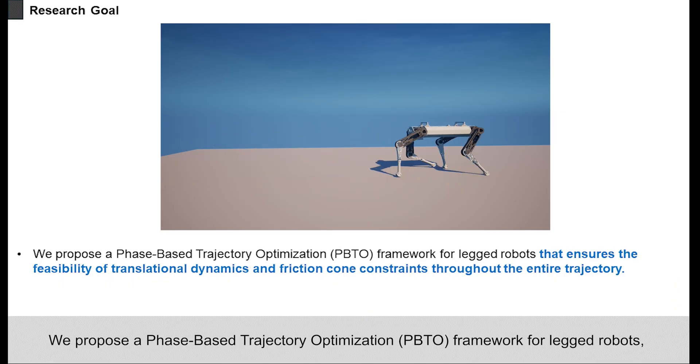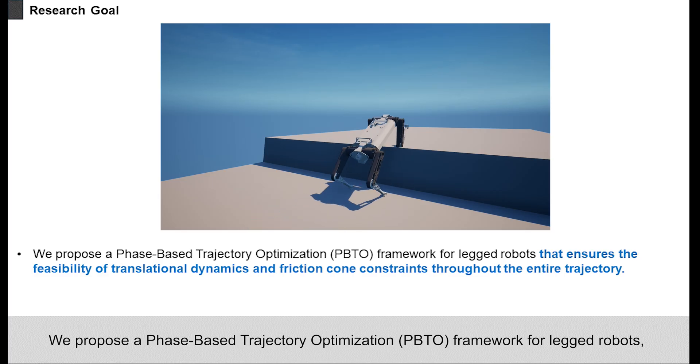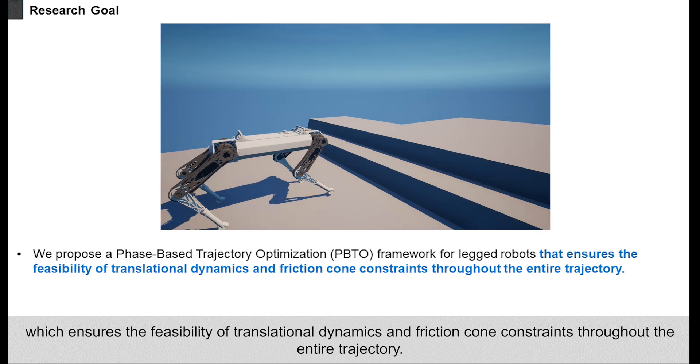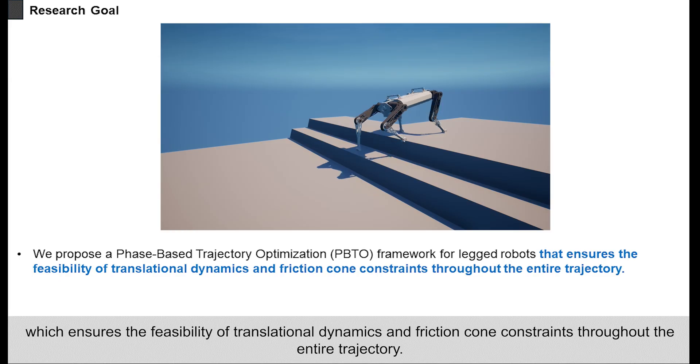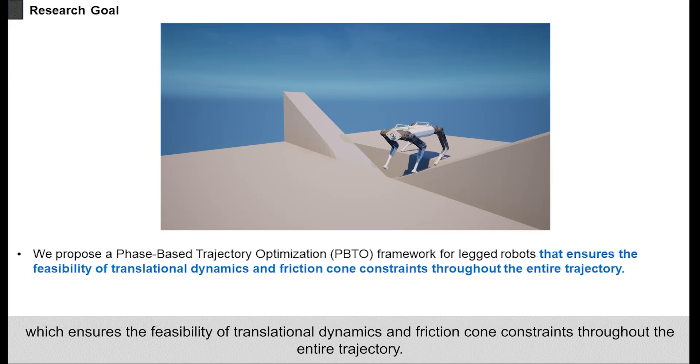We propose a phase-based trajectory optimization framework for legged robots which ensures the feasibility of translational dynamics and friction cone constraints throughout the entire trajectory.